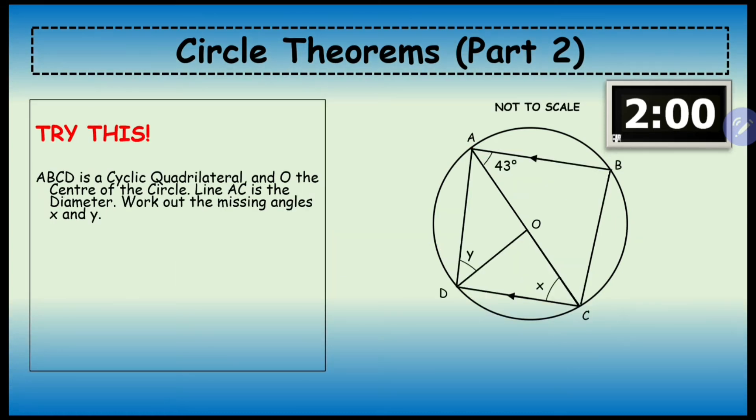Okay, let's have a look at this question. ABCD is a cyclic quadrilateral and O is the center of the circle. Line AC is the diameter, so A to C is the diameter. Work out the missing angles x and y.